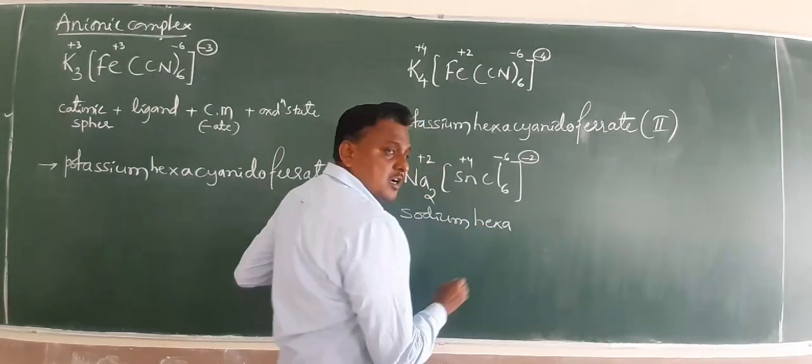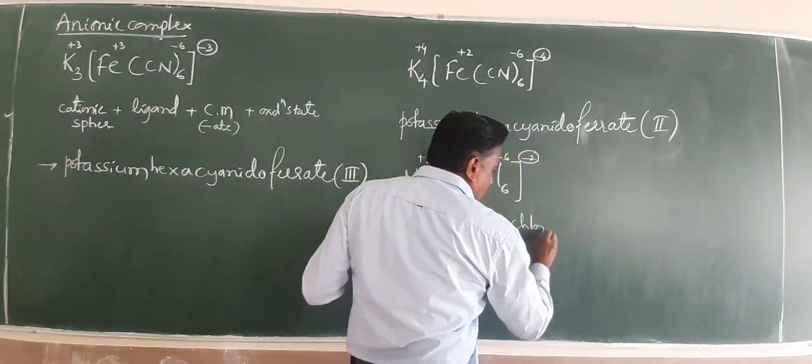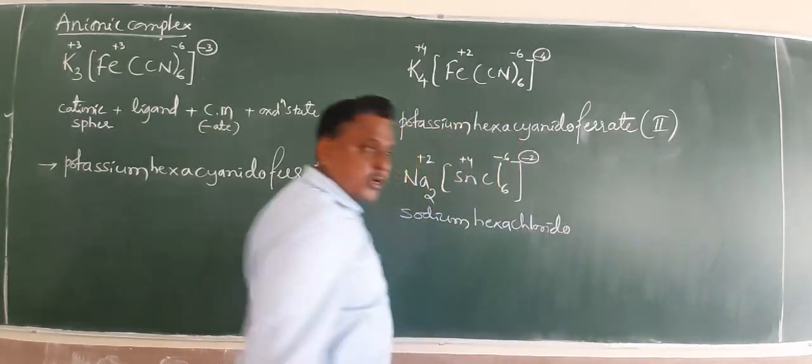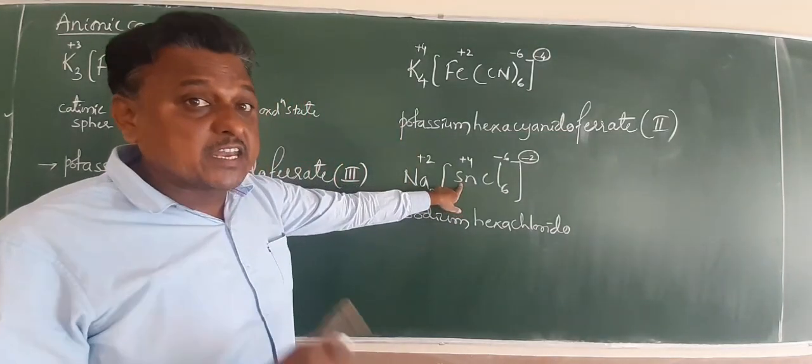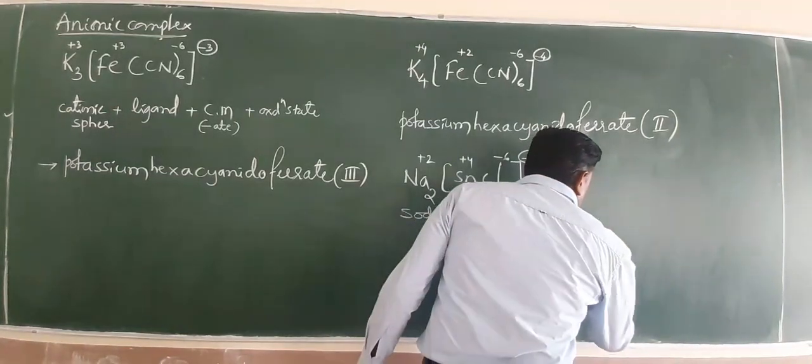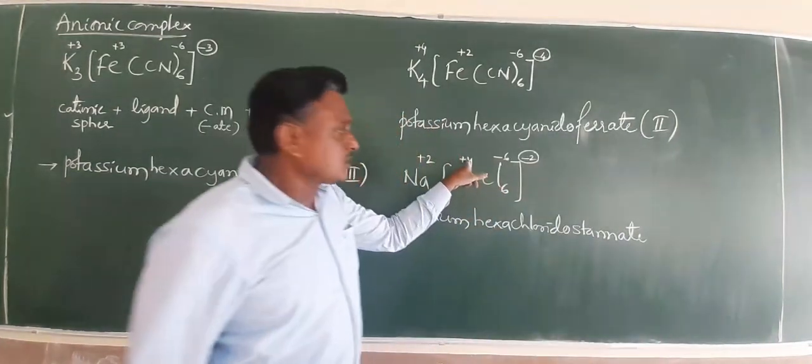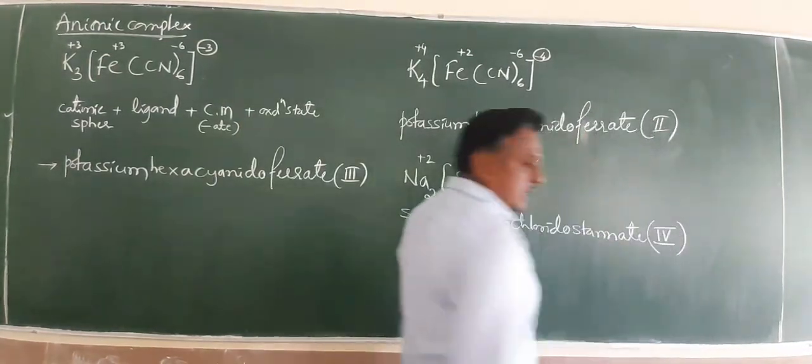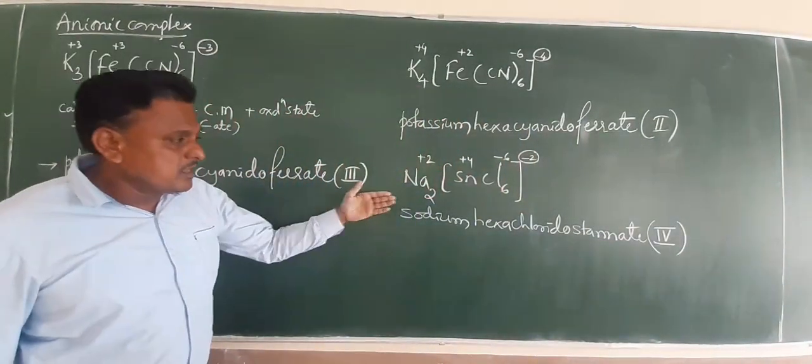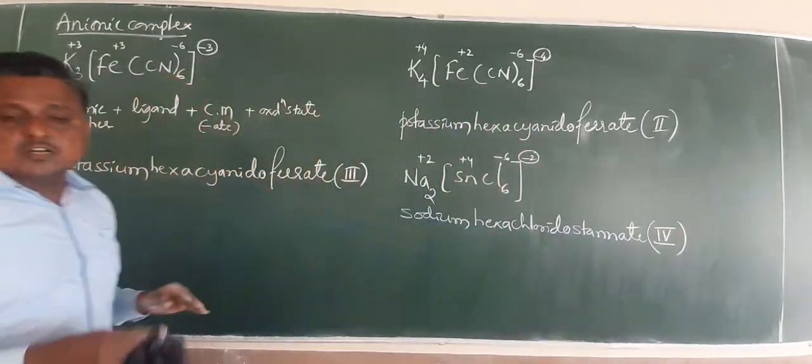Sodium. Hexa chlorido. Sn that is called stannate. Stannate. Oxidation stannate is 4. This is stannate 4.